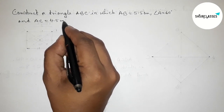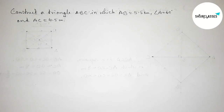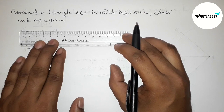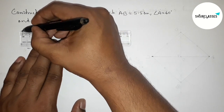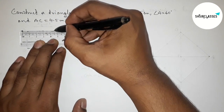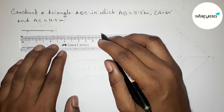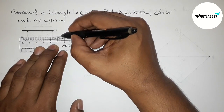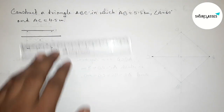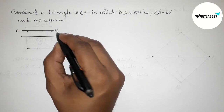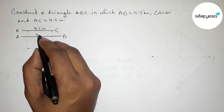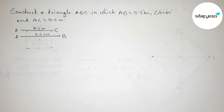Let's start. First, let us draw the two given sides: AB equals 5.5 centimeters and AC equals 4.5 centimeters. Drawing 4.5 centimeters — this is the AC line — and drawing another 5.5 centimeter line segment — this is AB. So AC equals 4.5 centimeters and AB equals 5.5 centimeters.